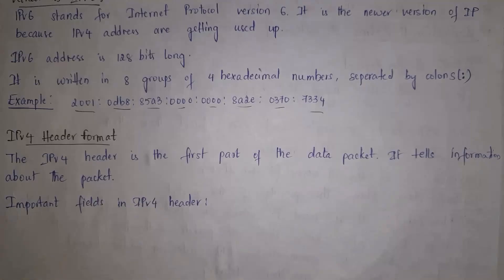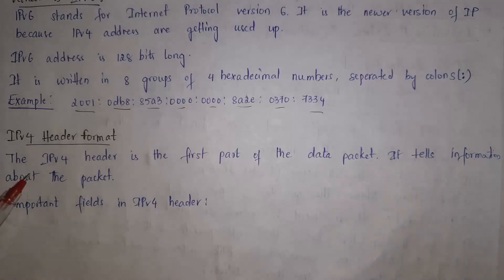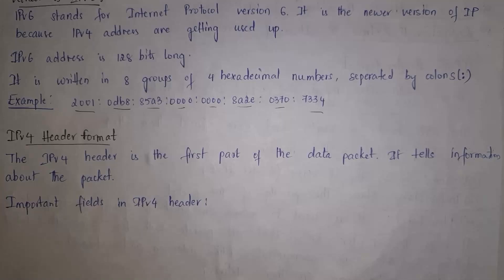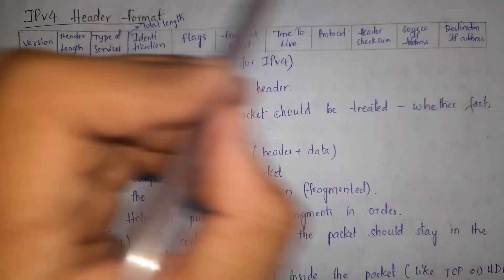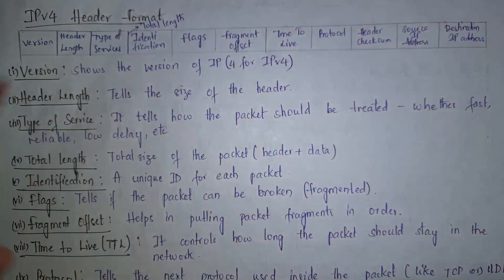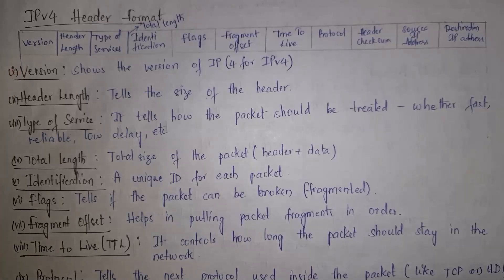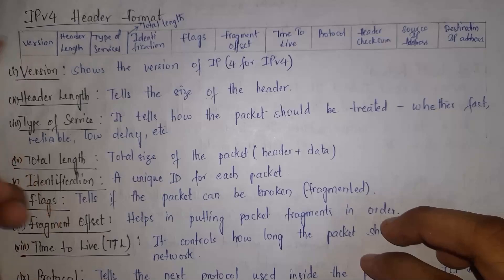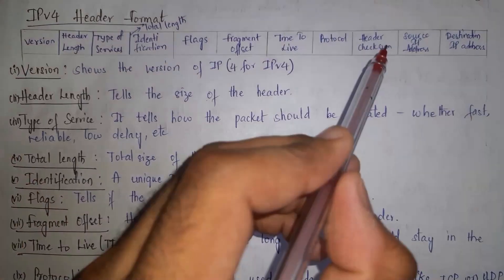Next I will explain the header format of IPv4. Whenever a sender transfers data to a receiver, along with the data there are many other fields included. The IPv4 header format provides complete information about the data packet. The first field is version, which tells the version of Internet Protocol — in this case IPv4. The second field is header length, which tells the size of the complete header.